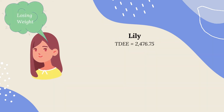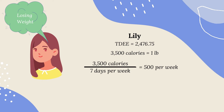Let's focus on Lily's results first. Lily's TDEE would be 2,476.75. Her goal is to lose weight. Since 3,500 calories equals one pound, divide 3,500 by seven days per week, which equals 500 per day. That 500 will be Lily's deficit. Subtracting 500 from her TDEE, if Lily wants to lose one pound a week, she needs to intake 1,976.75 calories per day.